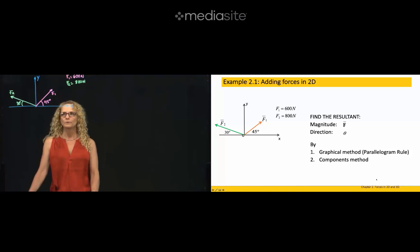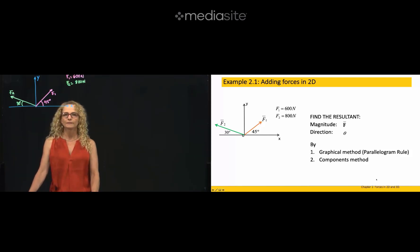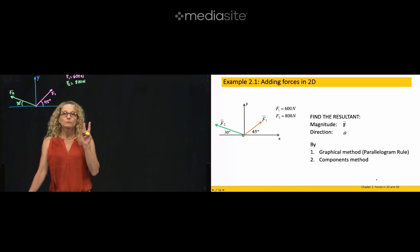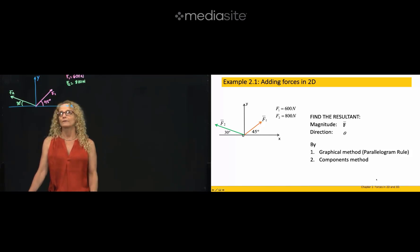This is example number 2.1 of chapter 2. What we are doing in this chapter is adding these two forces and we will find the resultant force. We will do it by two methods: the graphical method and the components method. Let's start by the graphical method.